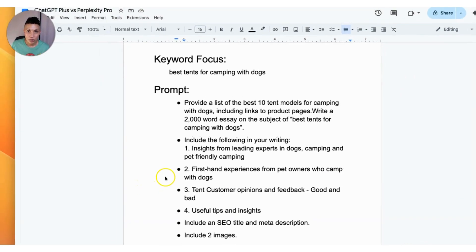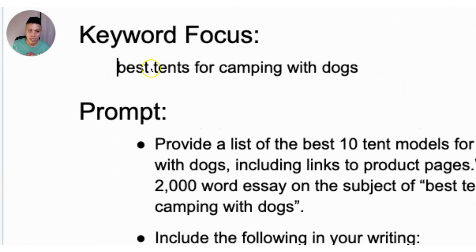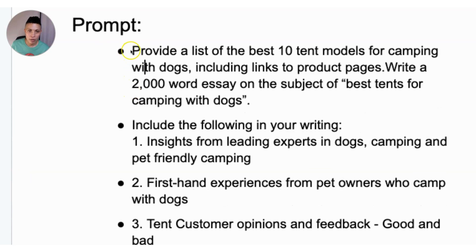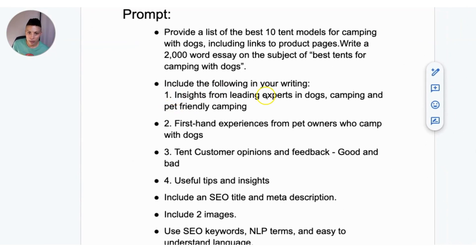Check the video description for a link to a Google Doc with these prompts you can use when generating your own article. Our article will focus on the keyword 'best tents for camping with dogs' — a top 10 best-of article featuring 10 different tents. The prompt asks platforms to include a list of the 10 best tent models for camping with dogs, links to product pages, insights from leading experts in dog camping and pet-friendly camping, and first-hand experiences from pet owners.